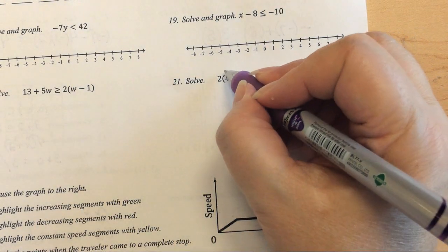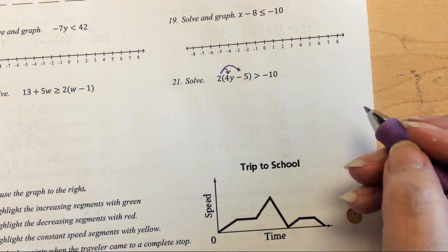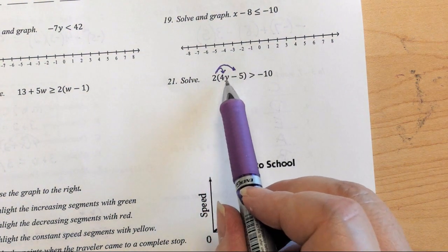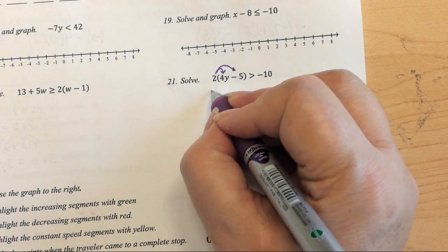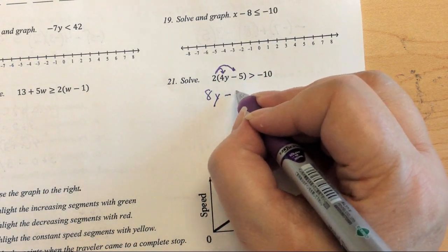So the first thing you're going to do is multiply and distribute that 2. So we have 2 times my 4y is 8y. 2 times my negative 5 is a negative 10.